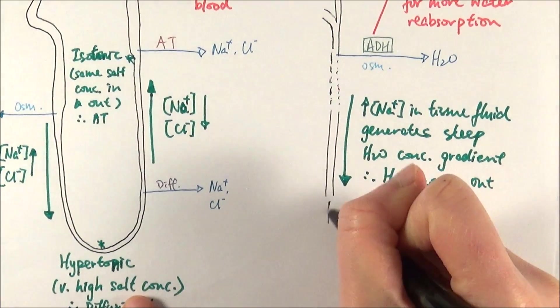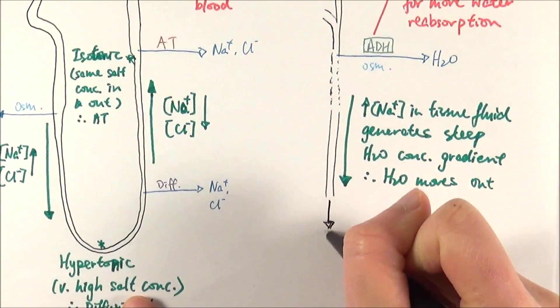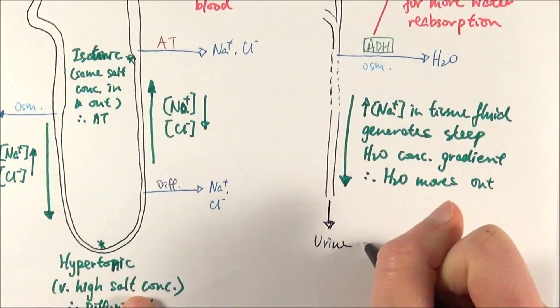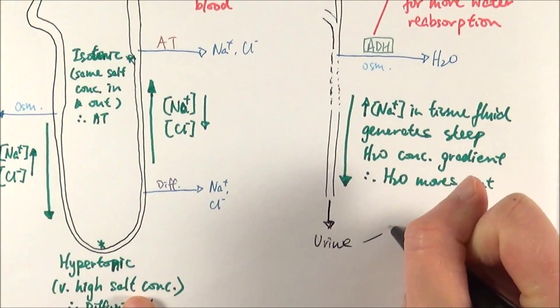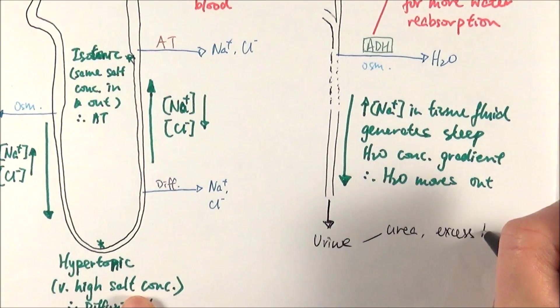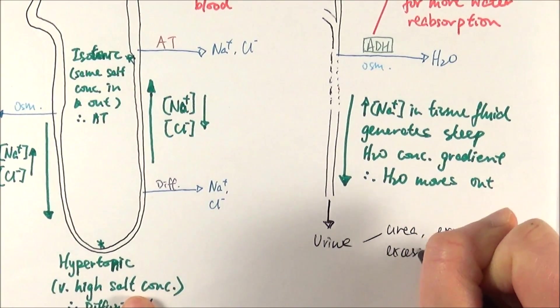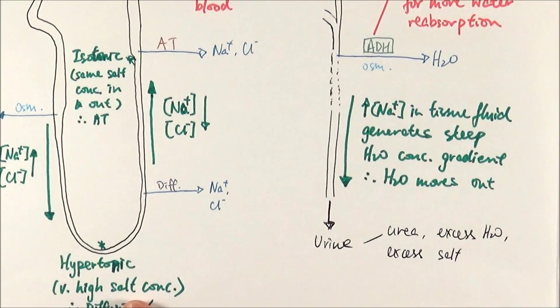And then finally, anything that is left then becomes the urine. And at this point, what you will get remaining will be urea, any excess water that the body doesn't need, excess salt. These will then go into the bladder to be excreted.